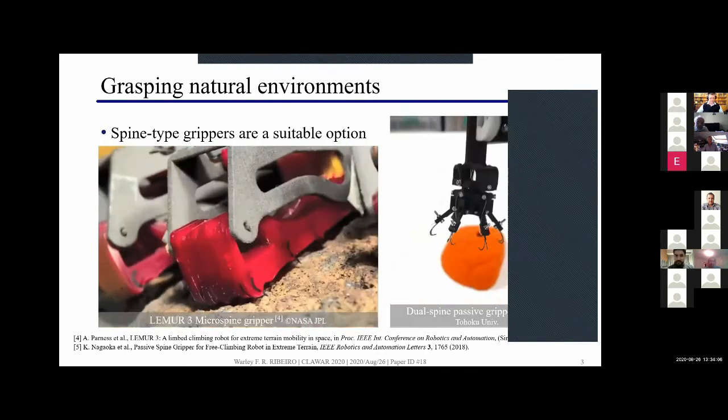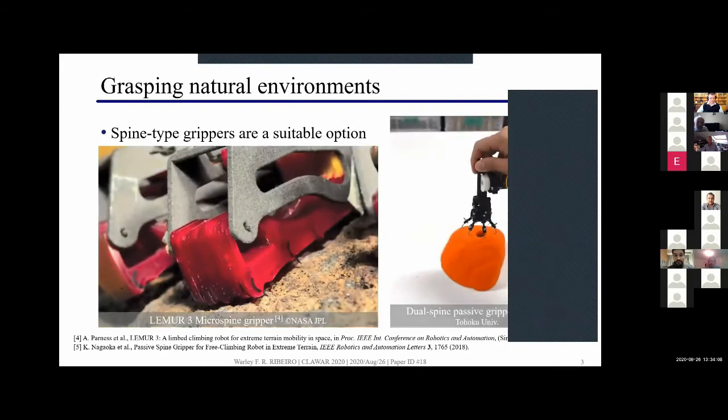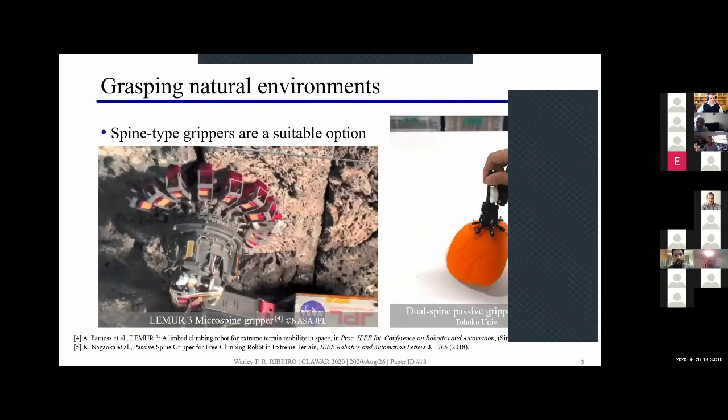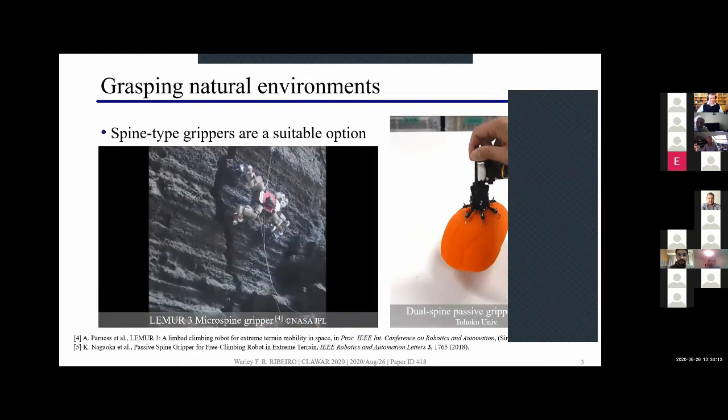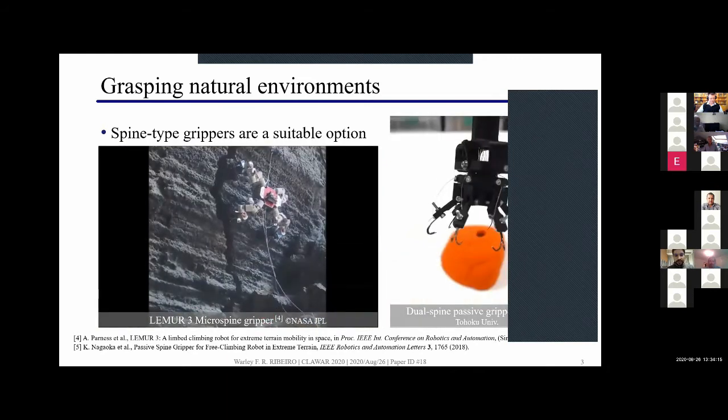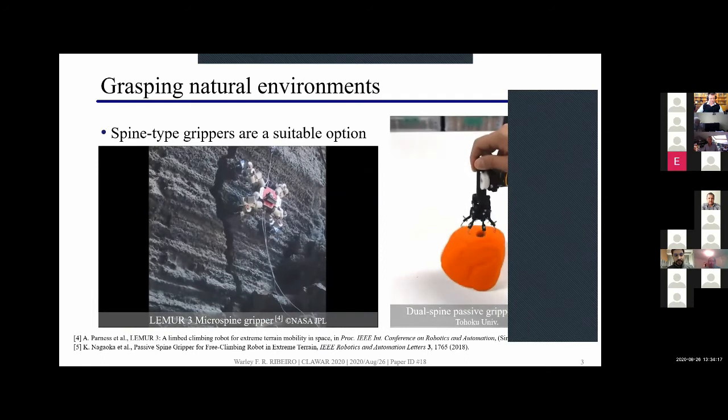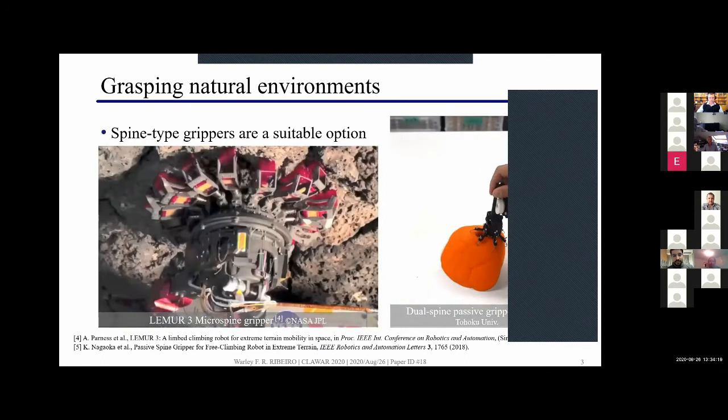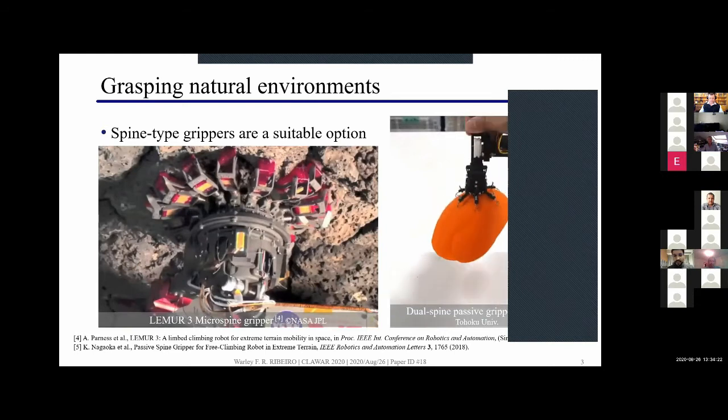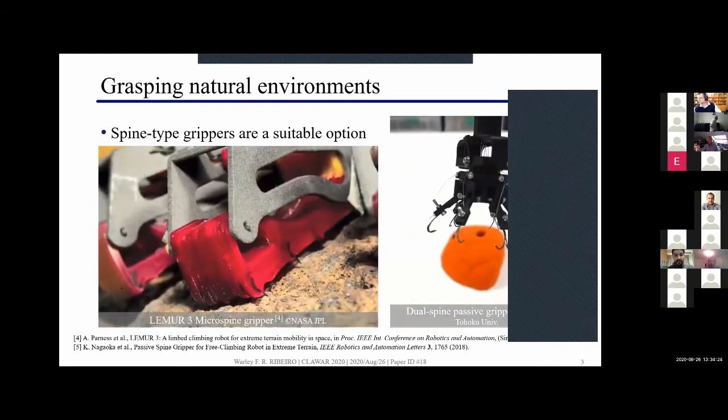However, such natural rock environments are very challenging because they have terrain with unknown shape and it's very challenging to keep the robot stable with stable locomotion. So far, spine-type grippers are a suitable solution for the locomotion of robots and here we have two examples: the microspine gripper developed by NASA JPL and also a prototype we developed in our group here.